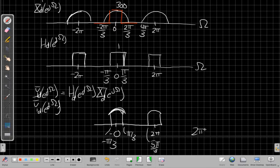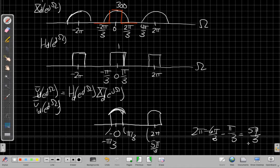Which would be π/3 less than 2π. Well, 2π is 6π/3, minus another π/3, is 5π/3. That's where the edge is.